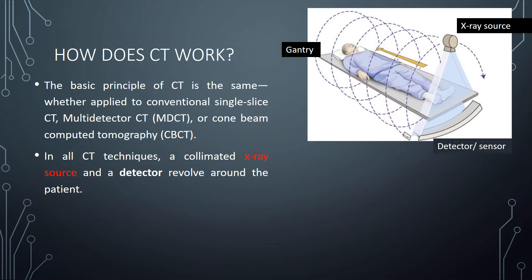In all CT machines, X-rays are used and the beam is generally a collimated X-ray source. A detector revolves around the patient to capture the image. The X-rays expose the part of the body being imaged, and that image is captured on the detector.